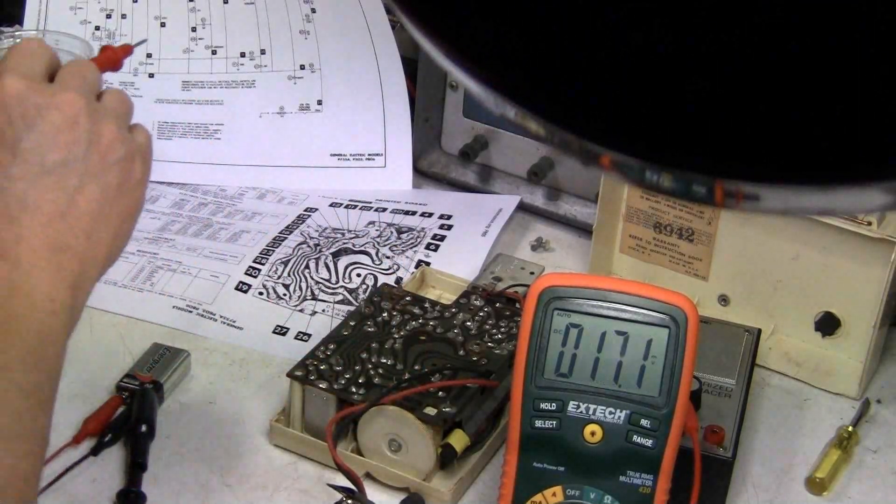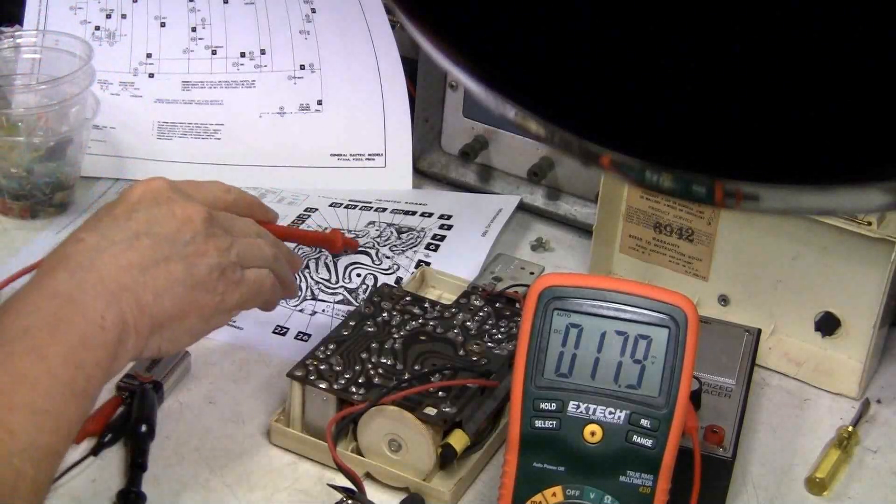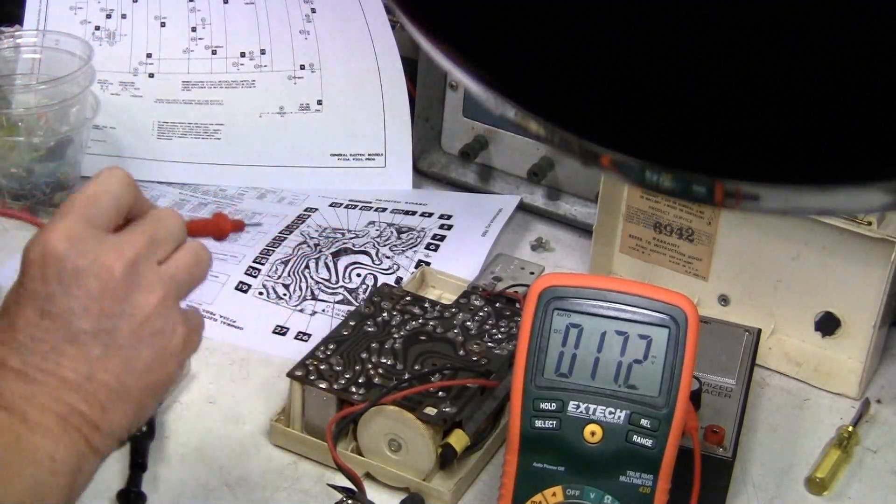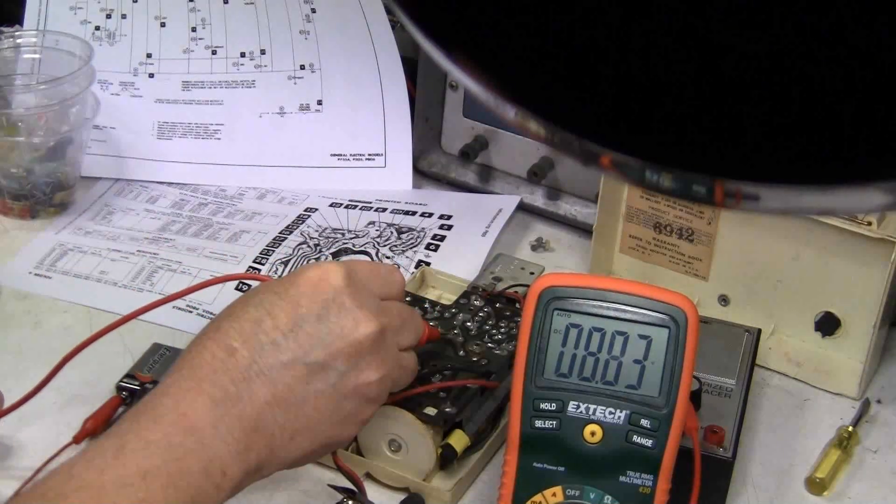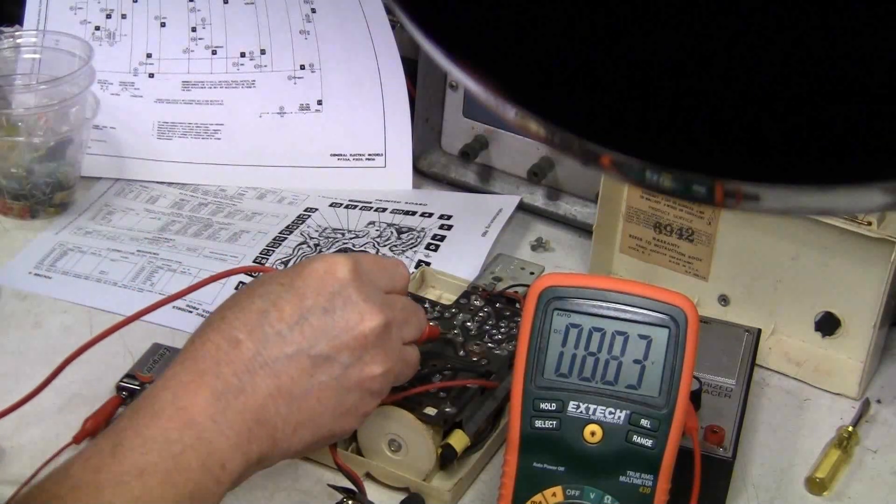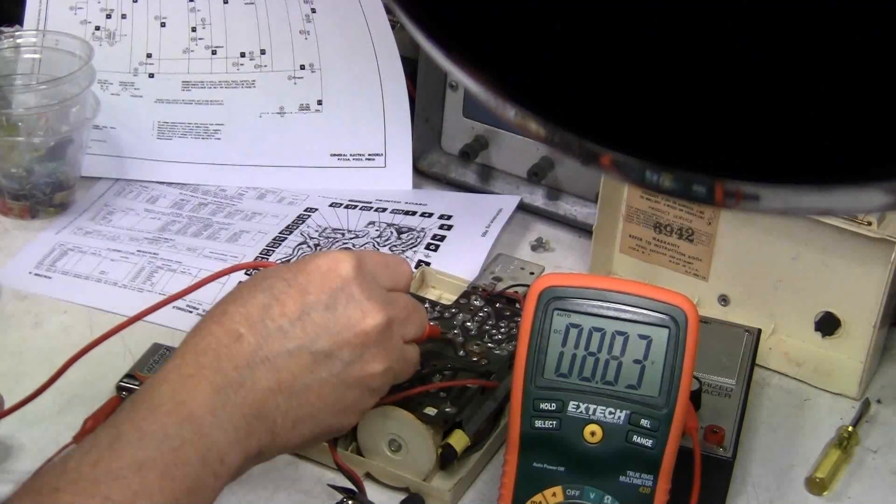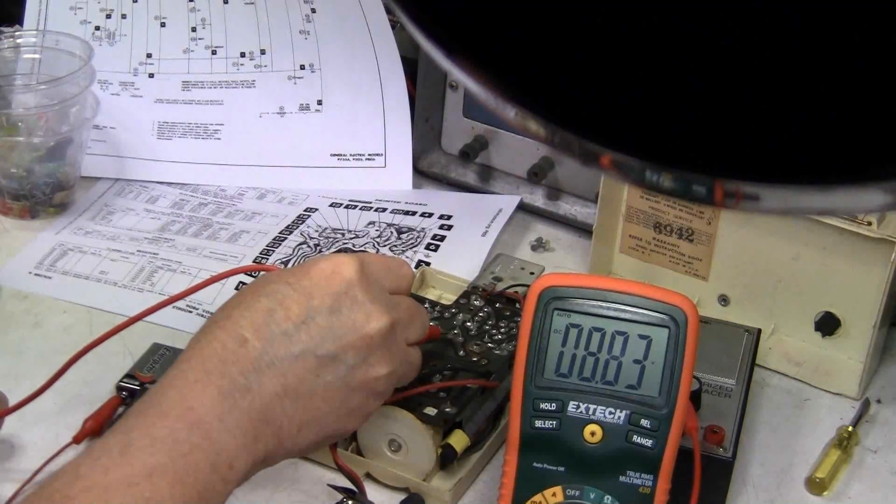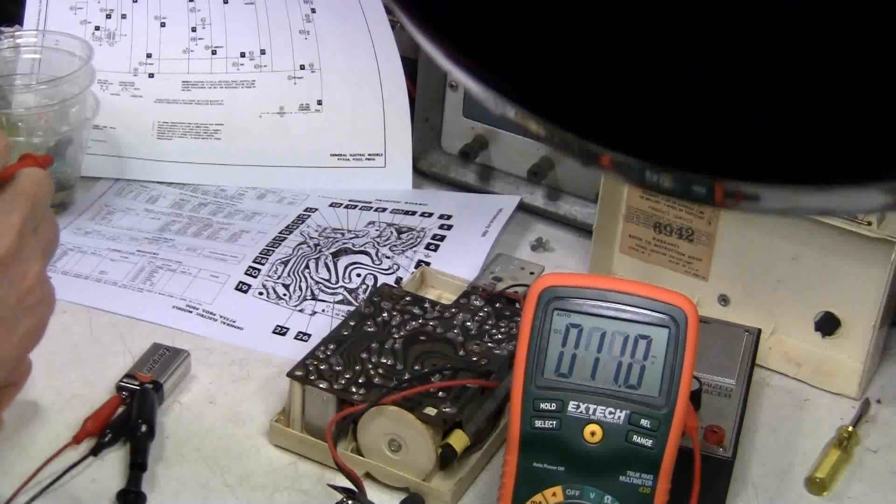How about the emitter on that transistor? That's 9. 9 is right here. And that's supposed to be 8.5 volts. A little high, but still not bad.